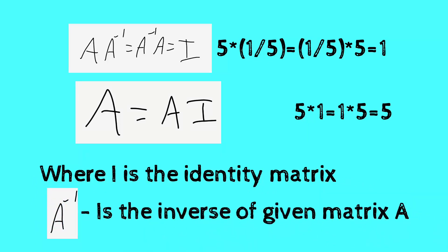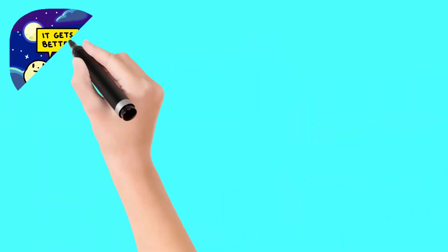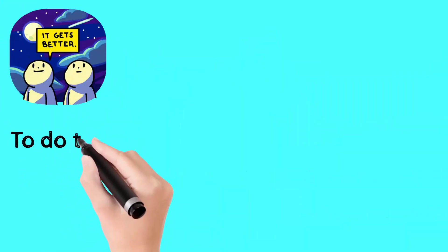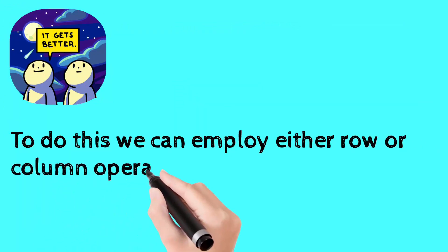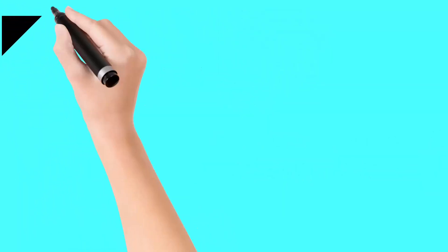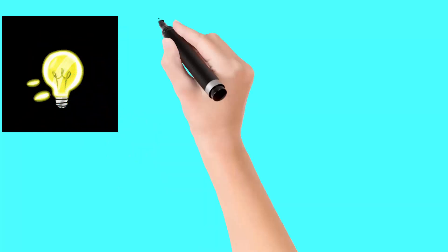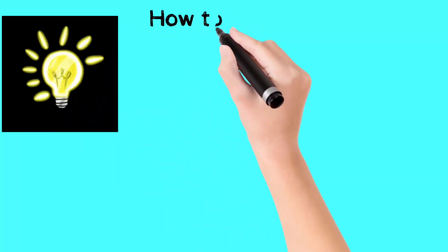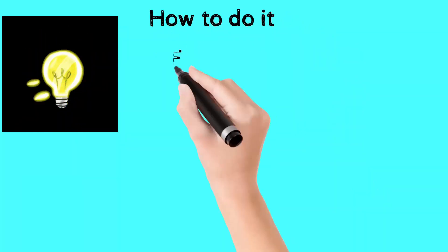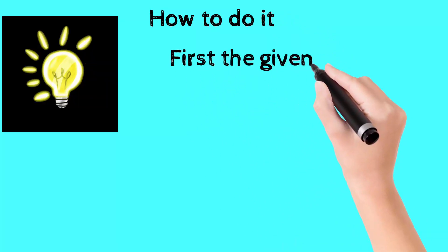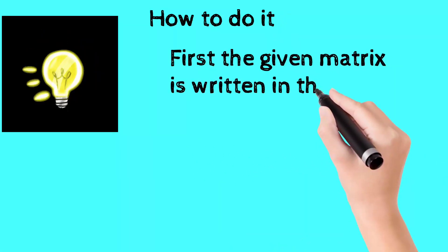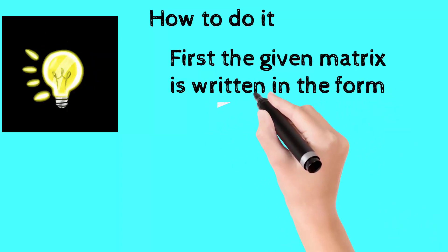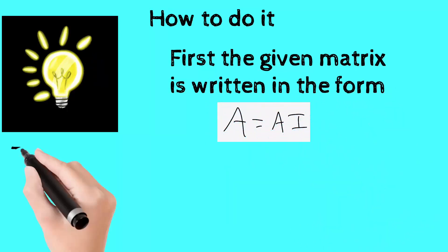A⁻¹ is the inverse of the given matrix. To find it, we can employ either a row operation or a column operation, but in the same problem, row and column operations should not be used together. The given matrix will be written in the form A = A·I, where I is the identity matrix.